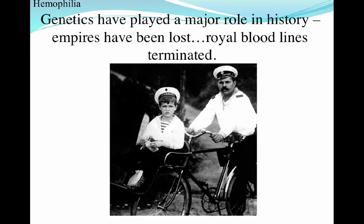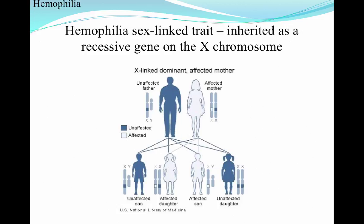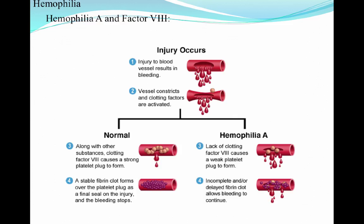Let's switch gears and look at a human condition called hemophilia, which has played a huge role in history and the loss of the royal bloodline. Hemophilia is a sex-linked trait — it's inherited as a recessive gene on the X chromosome. Recessive means that both chromosomes have to carry a copy of the hemophilic gene for it to be expressed. Because it's linked to the sex chromosome, it can be passed on while being linked to that X chromosome, and there are two chances to inherit it since both mom and dad contribute an X.